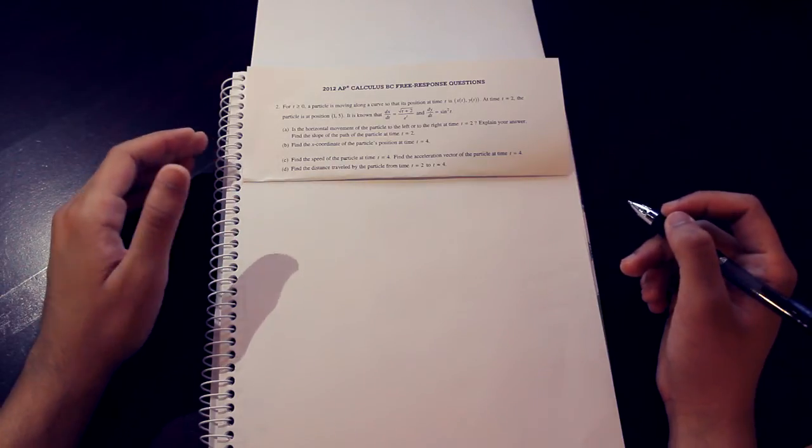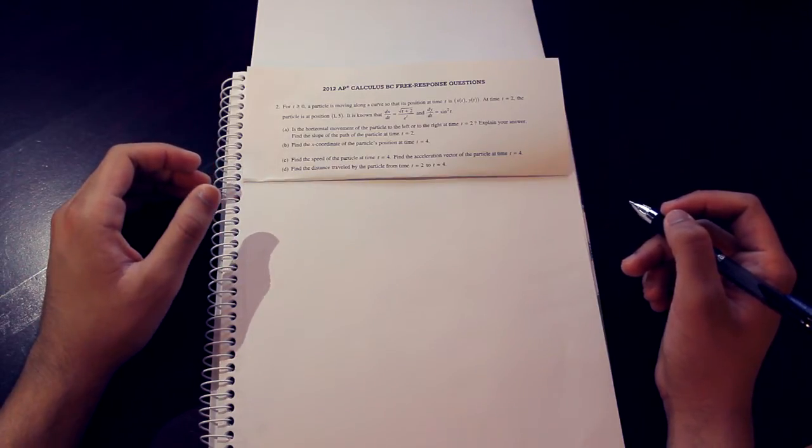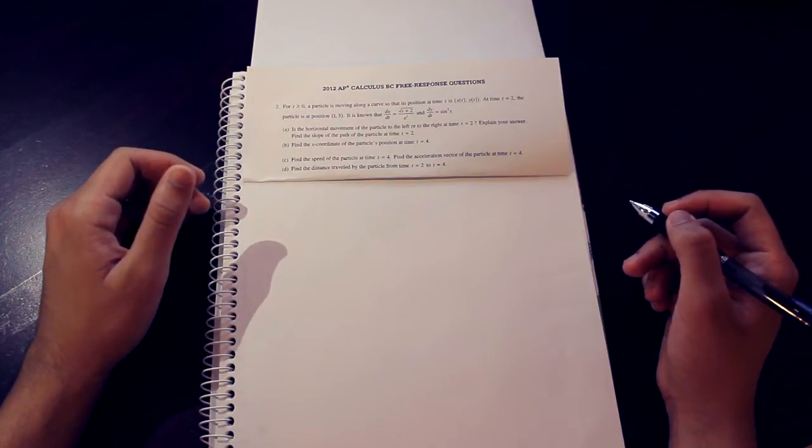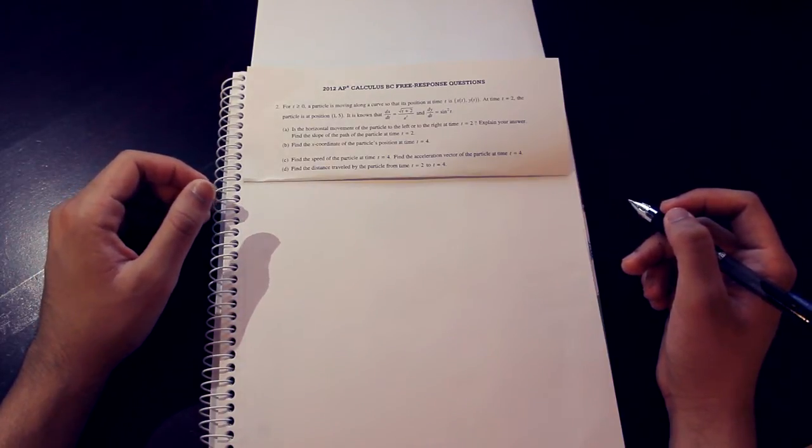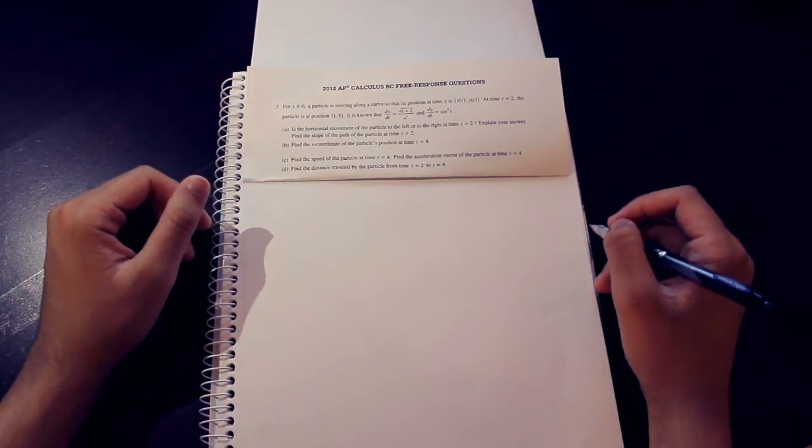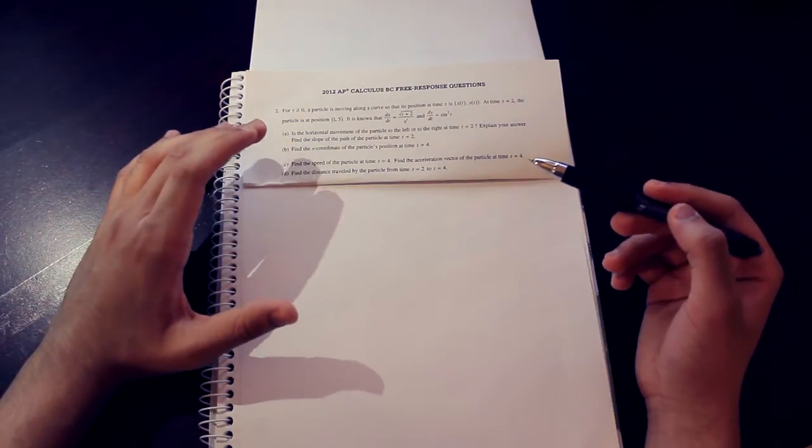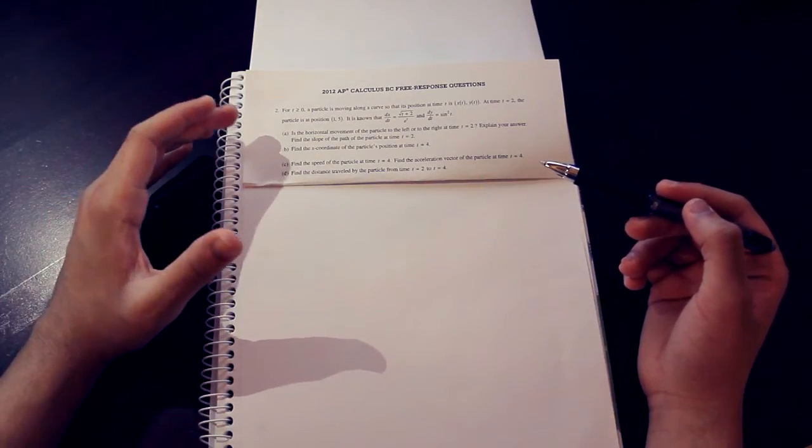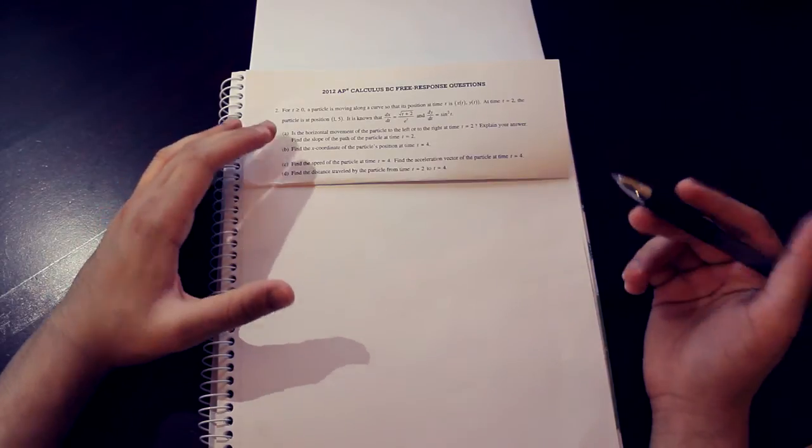Now we move on to part B. If we're trying to find the x coordinate of the particle's position at t equals 4, we have to integrate dx dt to find our position function. We have to integrate dx dt to find our position function.